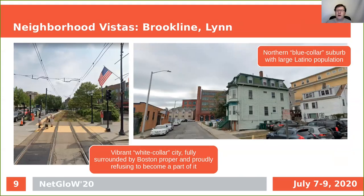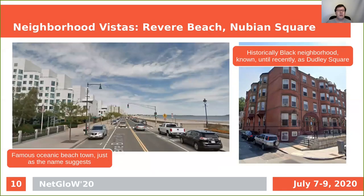In this slide, we have two suburbs: white collar, vibrant Brookline, which is fully surrounded by Boston proper and proudly refuses to become a part of it, on the left. On the right, there is the city of Lynn, the northern neighbor of Boston — a blue collar city with a large Latino population. Finally, two more pictures: one from Revere Beach, a famous oceanic beach town. On the right, we have the historically Black neighborhood, Nubian Square, which used to be known as Dudley Square until very recently — I believe it was renamed a couple of months ago.